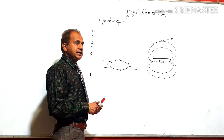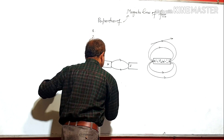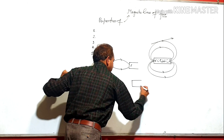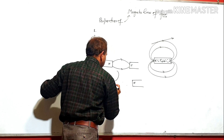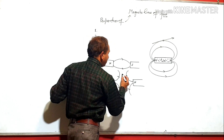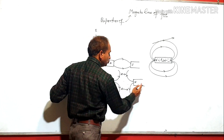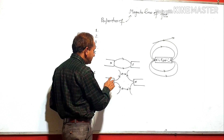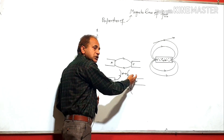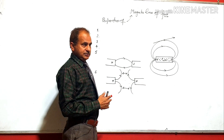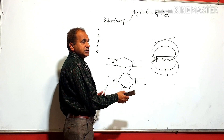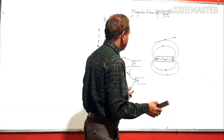Why do opposite poles of magnets attract each other? Because the magnetic lines of force tend to decrease their length. Next property: suppose this is North Pole and this is North Pole. The magnetic lines of force apply lateral pressure on each other. Due to this property, like poles repel each other. These are the properties of the magnetic lines of force.